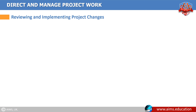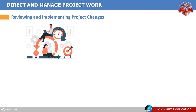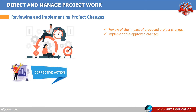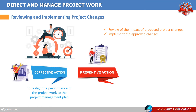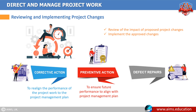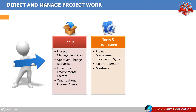Reviewing and implementing project changes: no matter how great the develop project management plan process was, it is natural to have requests, changes, and variances during the project lifecycle. The direct and manage project work process is used to review the impact of proposed project changes and implement the approved changes. For this purpose, the following actions are used — corrective action, which realigns the performance of the project work with the project management plan; preventive action, which ensures that future performance is aligned with the plan; and defect repair, an intentional activity to modify a non-conforming product or product component. Here are the inputs, tools and techniques, and outputs of this process.